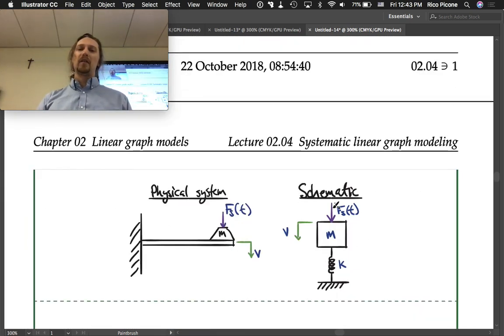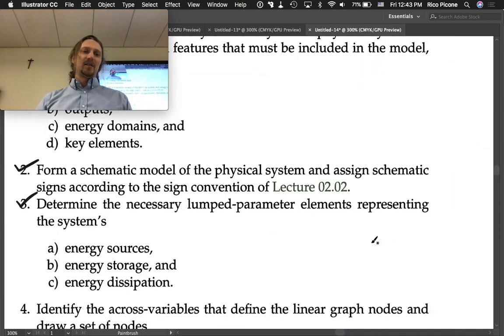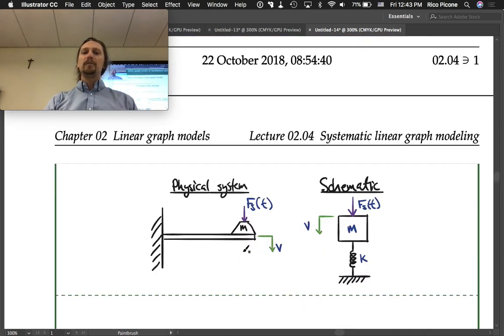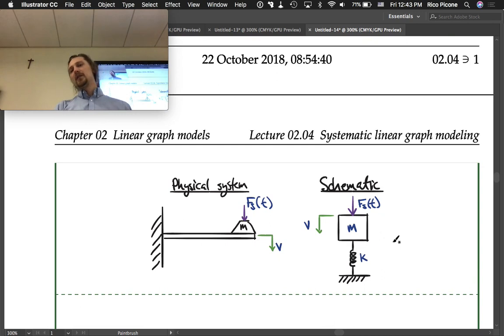Then identify the across variables that define the linear graph nodes and draw a set of nodes. In a translational mechanical system, we have to identify the distinct velocity places.